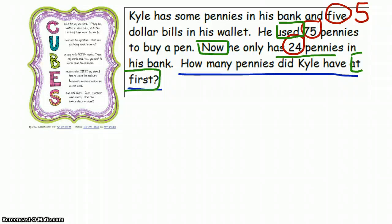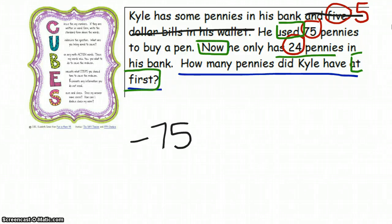E has actually two steps within it. The first is to evaluate what steps you're going to take to solve, and also to eliminate the information you don't need. This problem talks about dollar bills, but as you can see, the question says 'How many pennies did Kyle have at first?' It doesn't care about the dollar bills, so I'm simply going to mark out that extra information. Now I'm going to start evaluating my steps. It says he used 75, so I know that 75 went away at some point. And it says that now he has 24 — so he ended up with 24 after he took some away, but I'm not sure how many he started with.